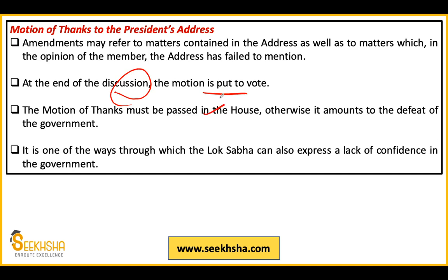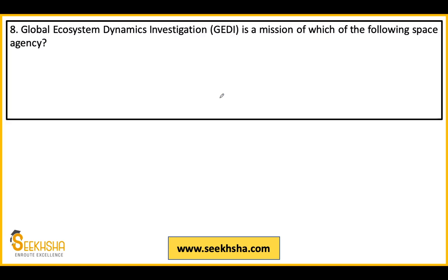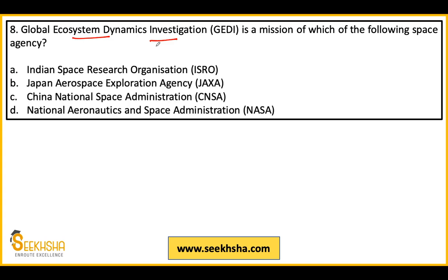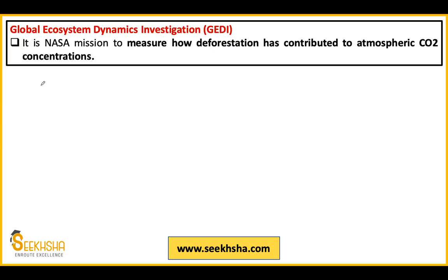The eighth question: Global Ecosystem Dynamic Investigation — GEDI — is a mission of which space agency? Options are ISRO, JAXA, CNSA, and NASA. The answer is option D: NASA. The GEDI mission by NASA basically investigates how deforestation has increased CO2 concentration in the atmosphere.